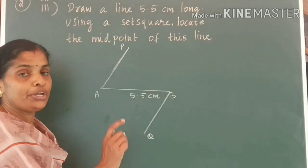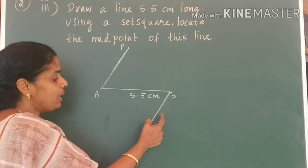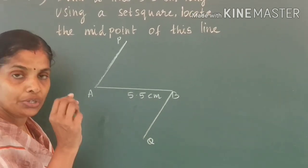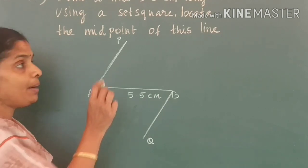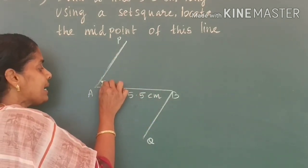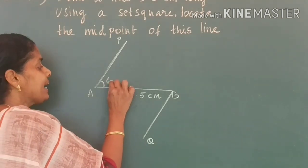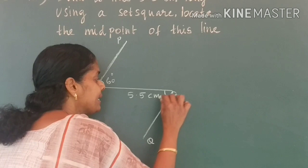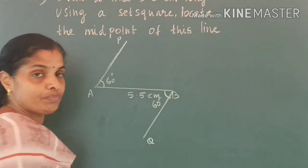Now, what do you know about AP and BQ? AP and BQ are two lines which are equal in measure. Also, the angles are equal. Here, the angle is 60 degree. Also, this angle is 60 degree.